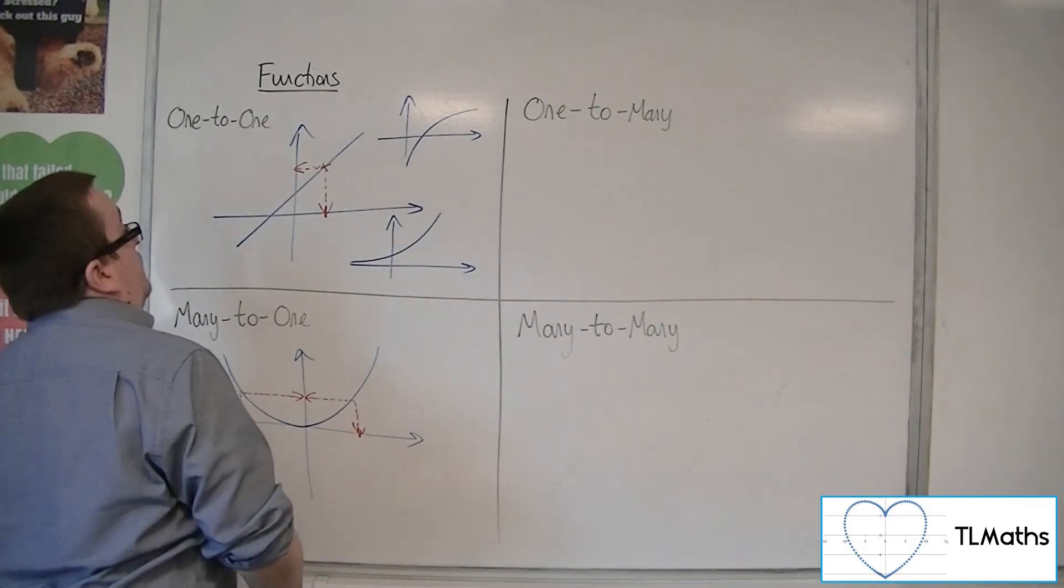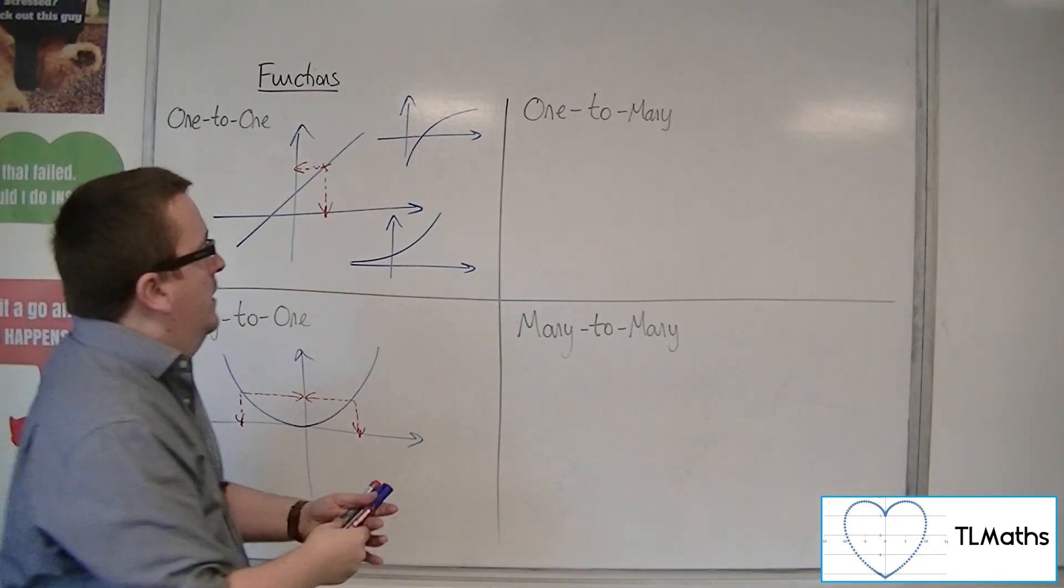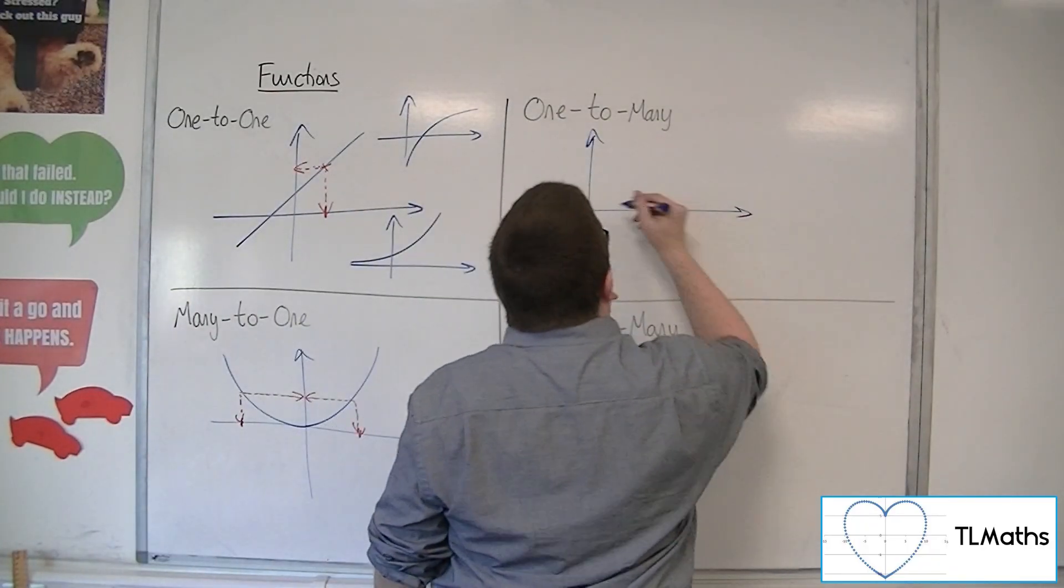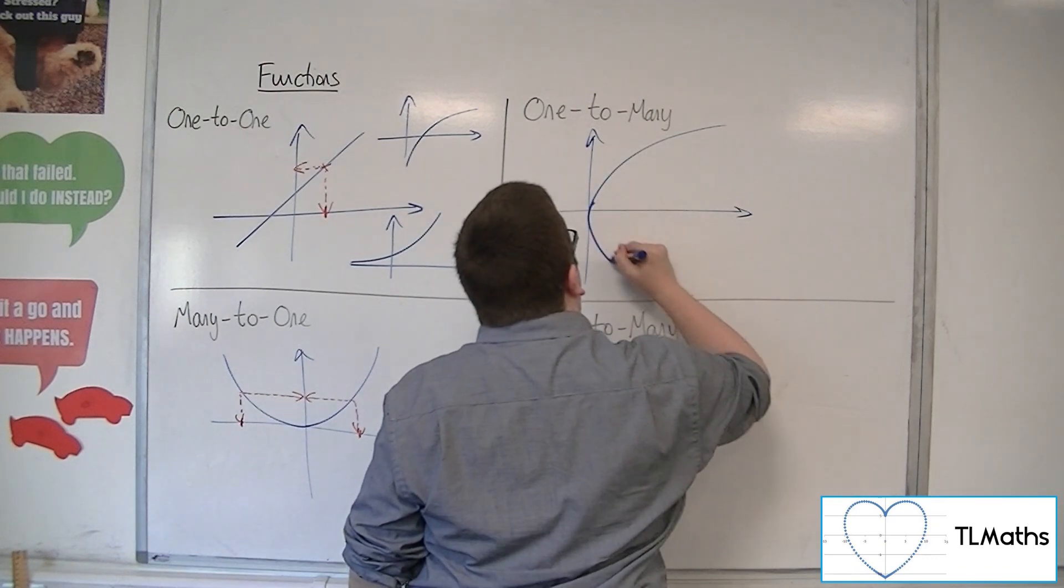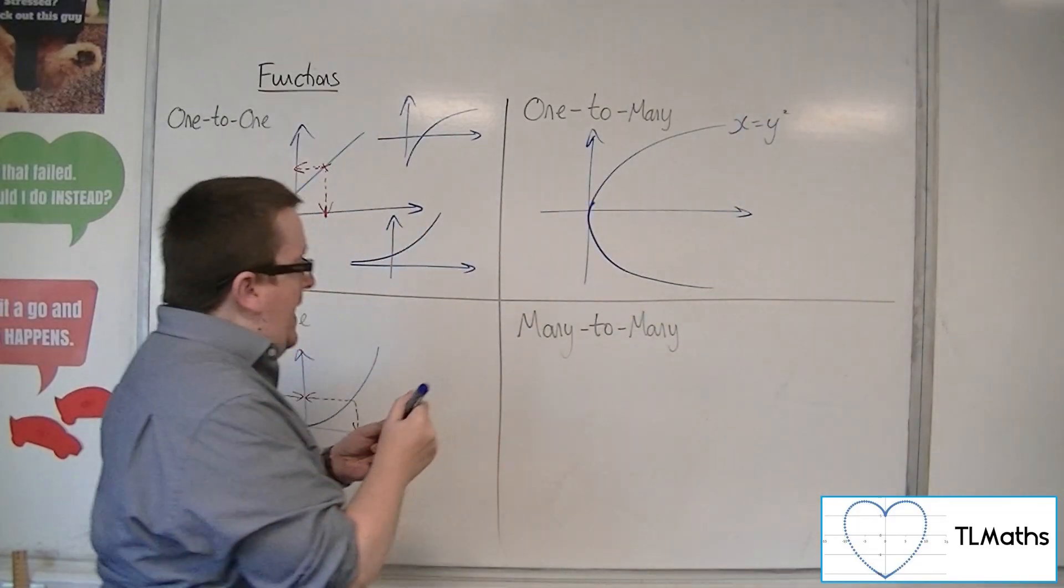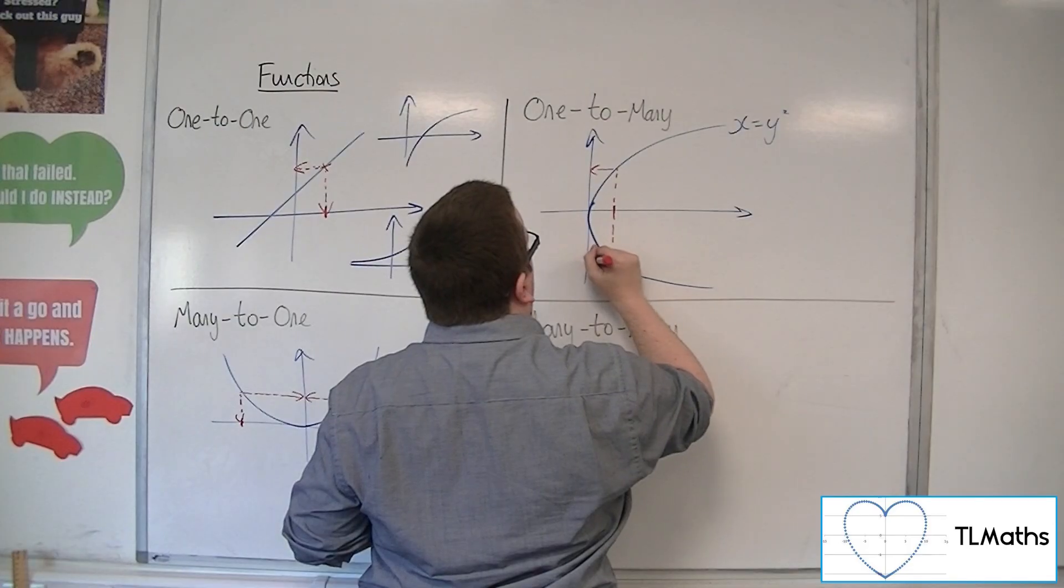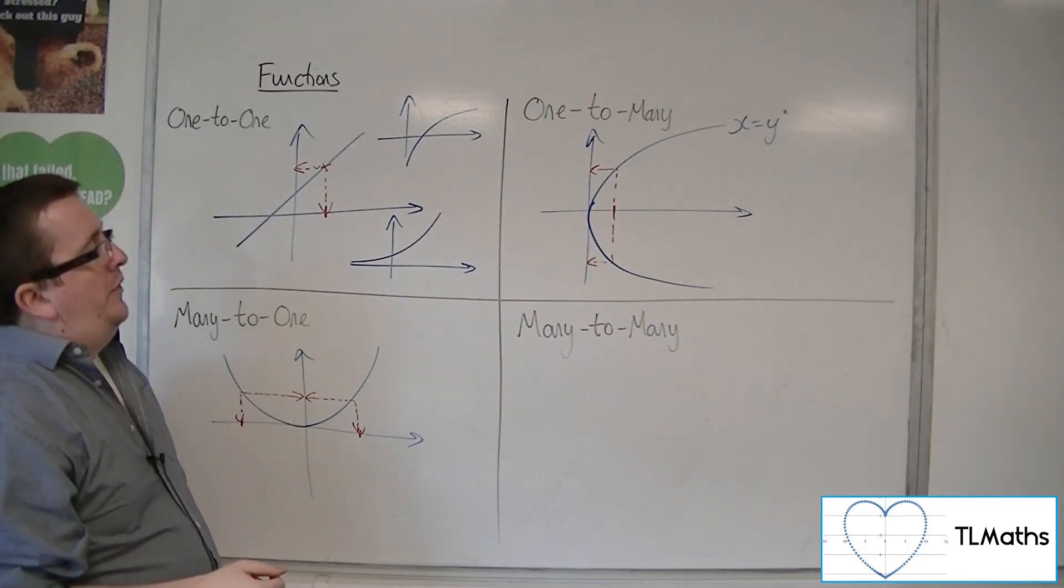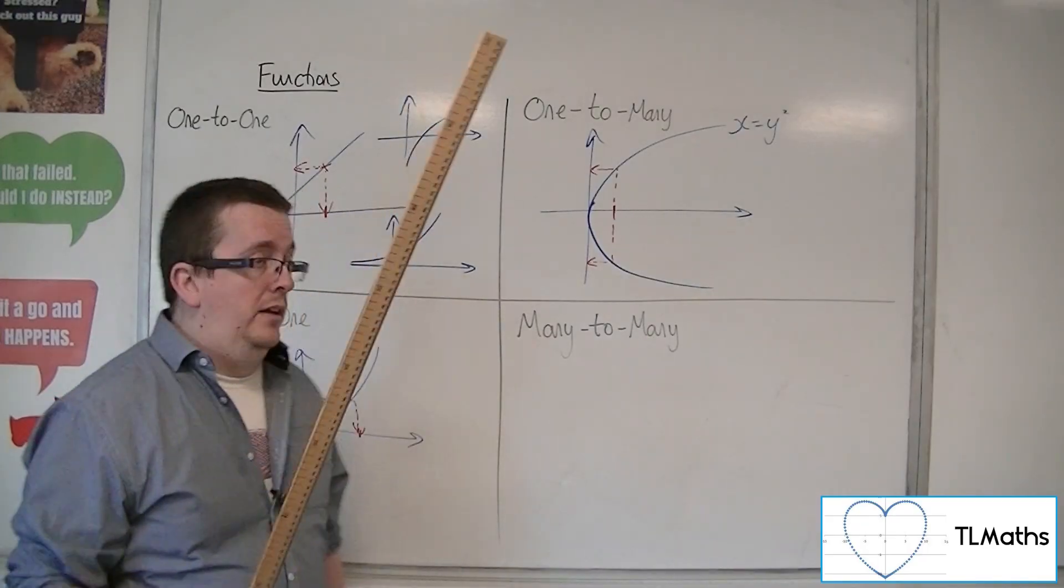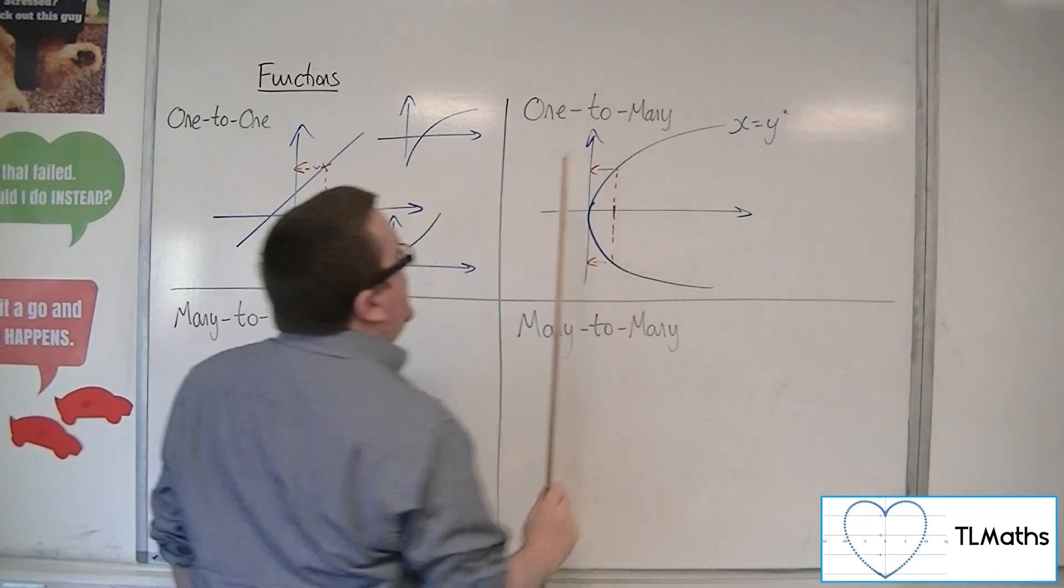One-to-many would mean that one x value could be giving you multiple y values. That's slightly more tricky to visualize. If you think about a parabola on its side, the graph x equals y squared, then here is a graph where one value of x can give you multiple values of y. That is an example of a one-to-many graph. You could do a similar vertical line test, where if you hit the graph more than once using a vertical line, then you know it is one-to-many.